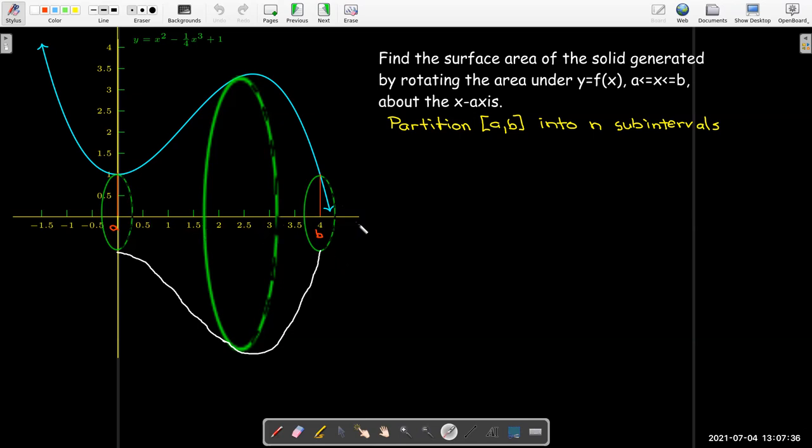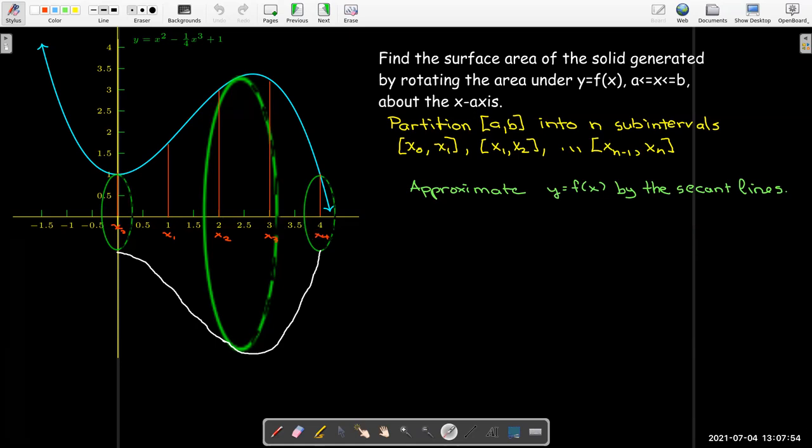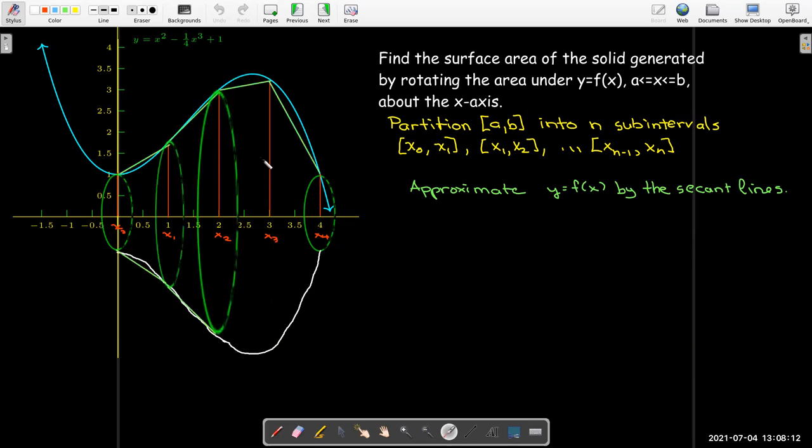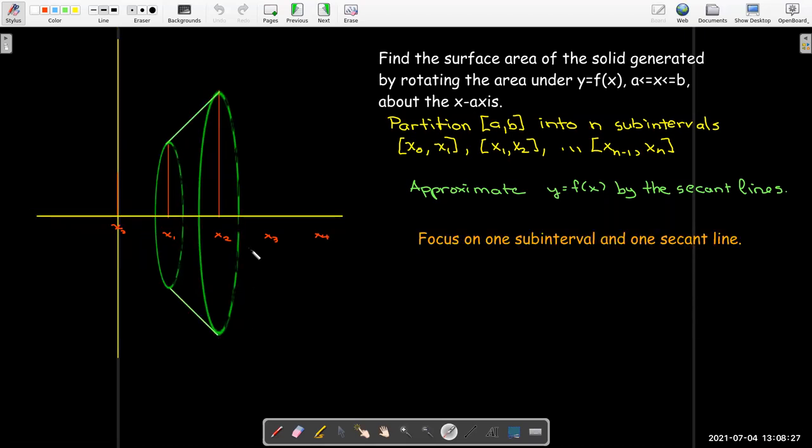We start by breaking up our interval from a to b into several smaller subintervals. Here I just have four of them, but we want to use a large number so we have a bunch of thin slices of this solid. Then I'm going to approximate the function on each of these slices by the secant line, and calculate the surface area of each slice. By surface area, I'm just talking about the outside, the lateral surface area.